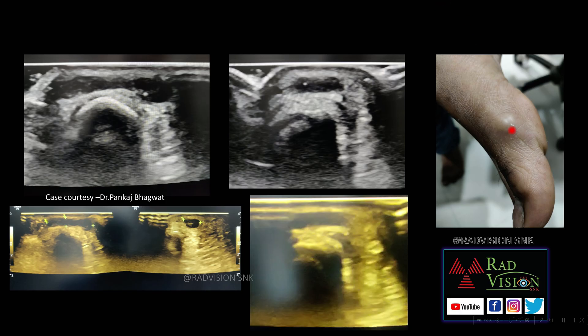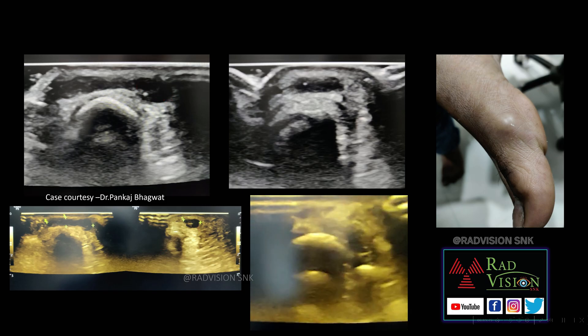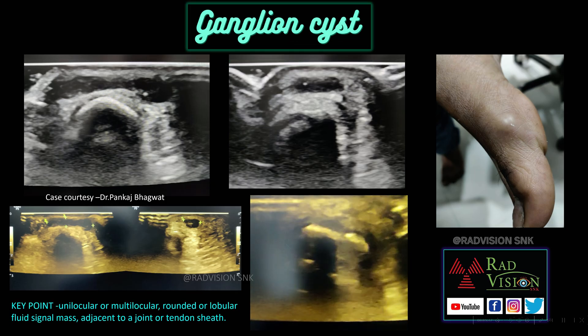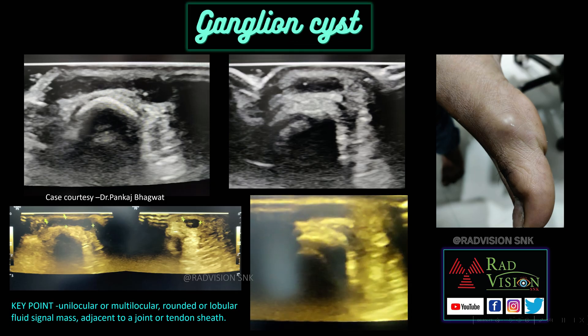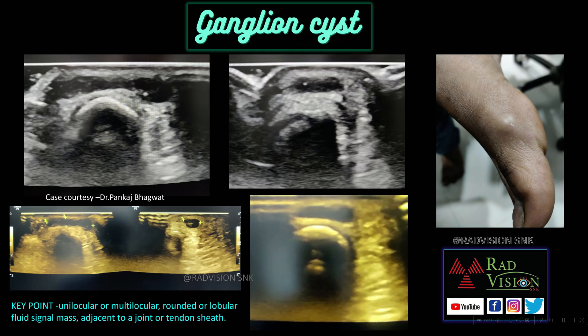Here there is a soft tissue swelling on the medial aspect of the foot, and you can see a cystic lesion or fluid collection-like mass lesion in close proximity with the tendon — this was a case of ganglion cyst. Whenever you see unilocular or multilocular, round to lobular fluid-containing cystic lesions close to the joint space or tendon sheath, definitely suspect ganglion cyst.